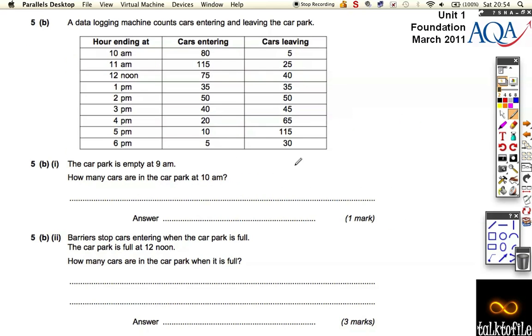Let's look at the next one. Data logging machine counts cars entering and leaving the car park. The car park is empty at 9 a.m. How many cars are in the car park at 10 a.m.? Well, 80 have come in at 9 and then by 10 o'clock, 5 have left. That leaves 75 cars in there because we've had to do 80 take away 5.